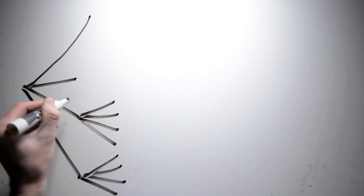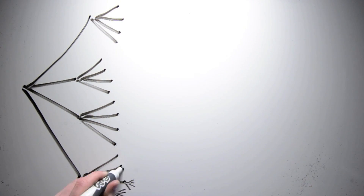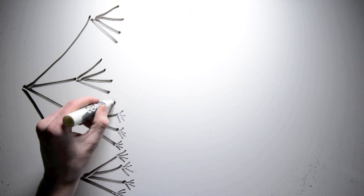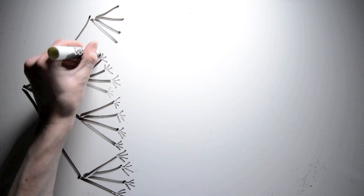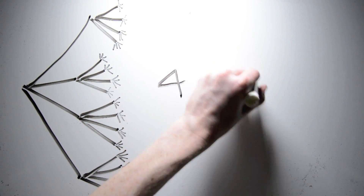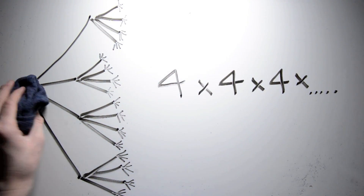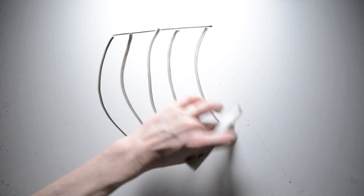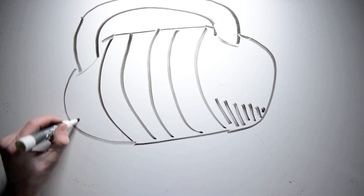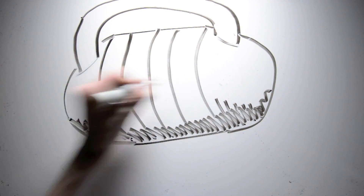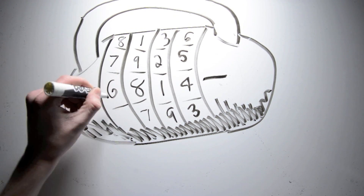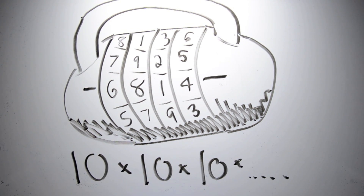What if I had, for example, four shirts, four pants, four shoes, and so on? By using the counting principle, we know that I'll have four times four times four and so on different outfits to wear. Or if I have a lock which has different slots, and in each slot I can choose one of ten numbers, then the total number of possible solutions is ten times ten times ten and so on, depending on the number of slots.